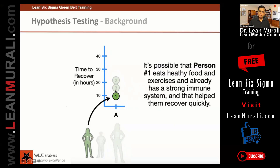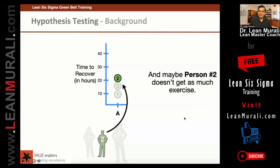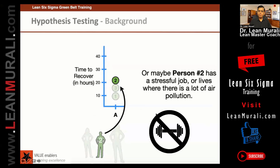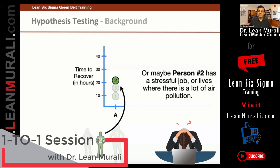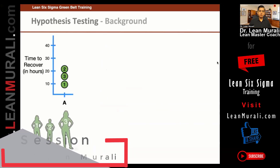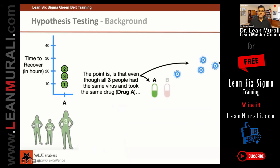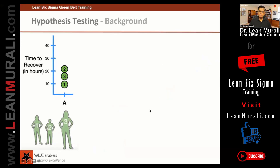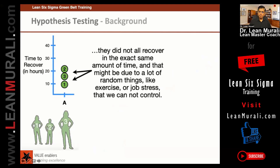Person one recovered faster probably because he has healthy food, exercises, and already has a strong immune system that helped them recover quickly. It is also possible that person two did not exercise as much, or person two has a stressful job or lives in an environment with a lot of pollution. Even though all three people had the same virus and took the same drug, they did not recover in exactly the same amount of time.